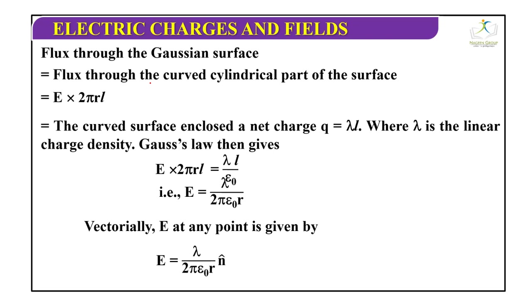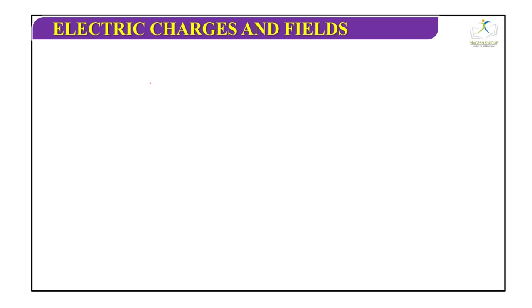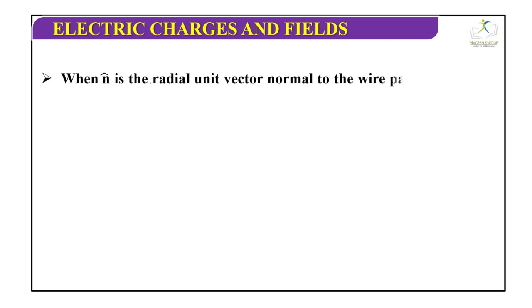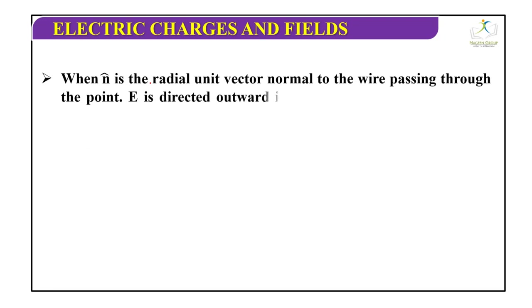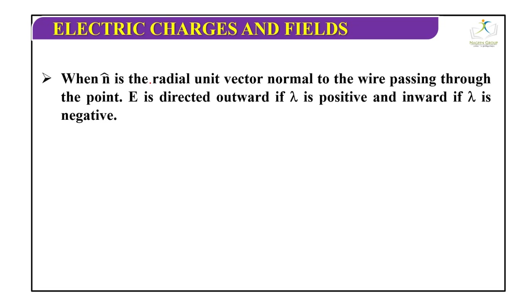Vectorially, E equals lambda by 2 pi epsilon naught r times n cap, where n cap is the radial unit vector normal to the wire passing through the point. E is directed outward if lambda is positive and inward if lambda is negative. Note that only the charge enclosed by the surface was included, though the electric field E is due to the entire wire. The assumption that the wire is infinitely long is crucial, without this we cannot take E to be normal to the curved part of the cylindrical Gaussian surface.